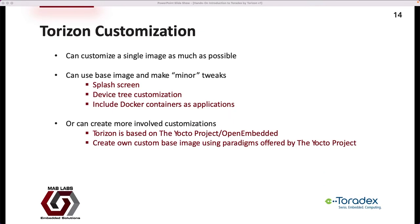Torizon offers different levels of OS image customization. For example, we can use a base image made available by Toradex and make relatively minor tweaks — such as customizing the splash screen, customizing the device tree to support additional peripherals, or prepackaging Docker containers as applications into the image. On the other extreme, we can even customize the base image. Torizon is inherently based on the Yocto project, and if we need to, we can create our own custom base image using Yocto best practices and then use that for minor tweaks.